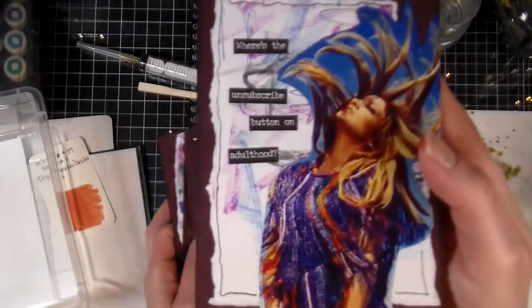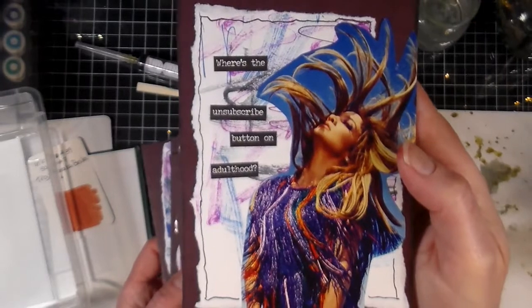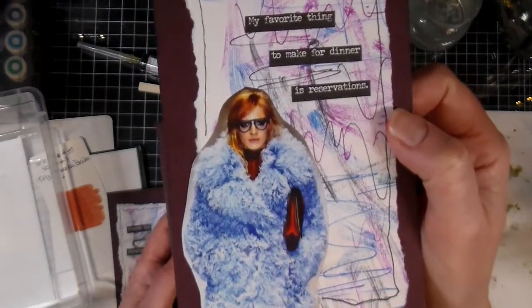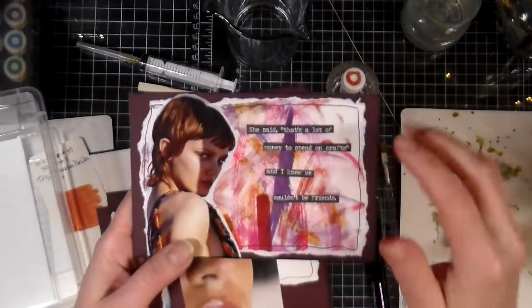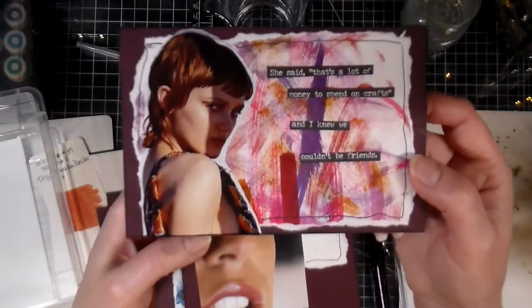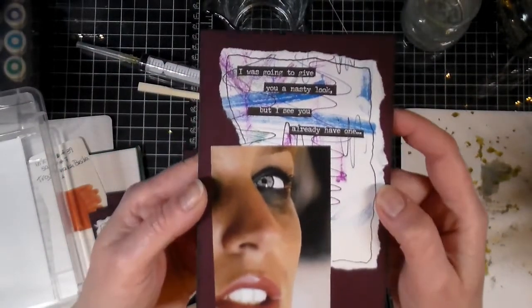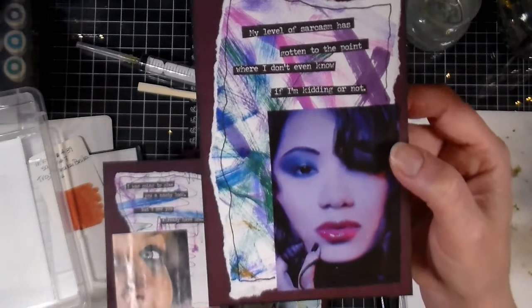Let's start off with the adults. This one says where's the subscribe button to adulthood. Then you've got my favorite thing to make for dinner is a reservation, and I so agree. I love how the backgrounds turned out. She said that's a lot of money to spend on craft and I knew we couldn't be friends. I was going to give you a nasty look but I see I already have one. And my level of sarcasm has gotten to the point where I don't even know if I'm kidding or not.